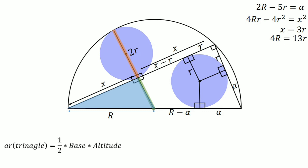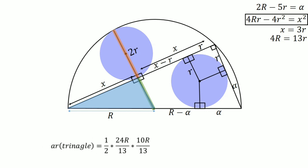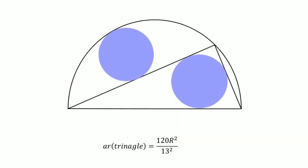Now we know the area of the triangle. It is a right-angle triangle, so area equals one-half times base times altitude. The base equals 2x, which is 2 times 3 times (4R/13), giving 24R/13. The altitude equals R plus 2r, substituting r equals 4R/13 gives altitude equals 10R/13. Putting the values in, the area of the triangle equals 120R squared divided by 13 squared.